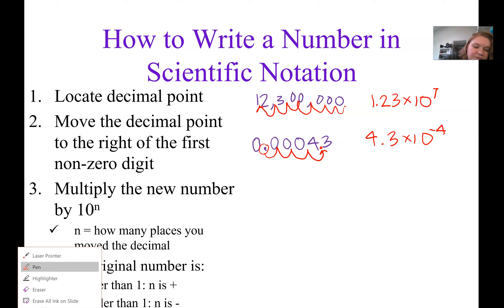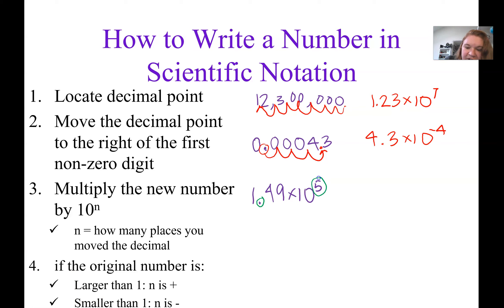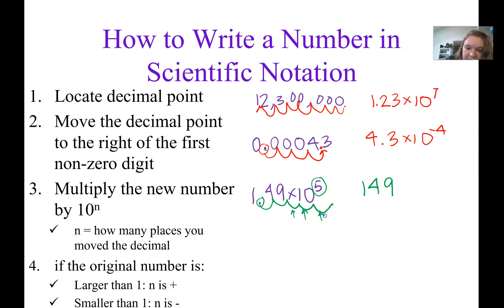What if we're going the other direction? Starting with 1.49 times 10 to the 5th, we do the same steps but in reverse. The exponent is positive, so I need to make the number bigger by moving the decimal to the right 5 places. So we get 1, 4, 9, and then the empty places get filled in with zeros to show the size of our number.